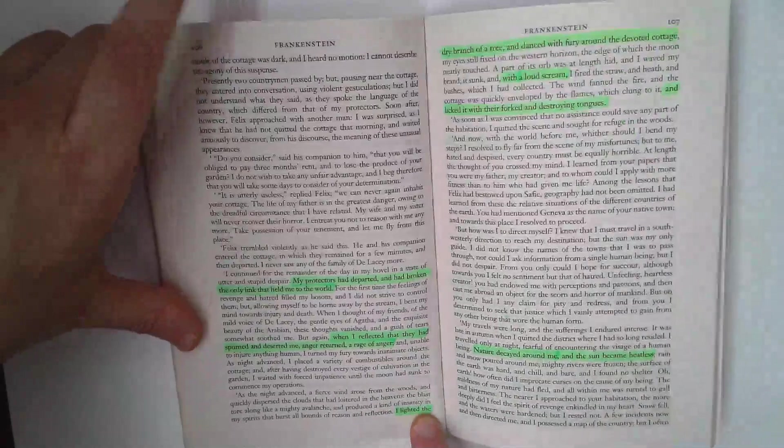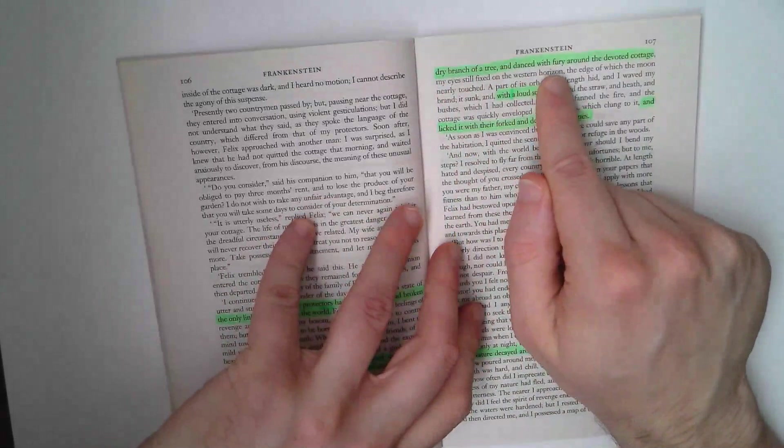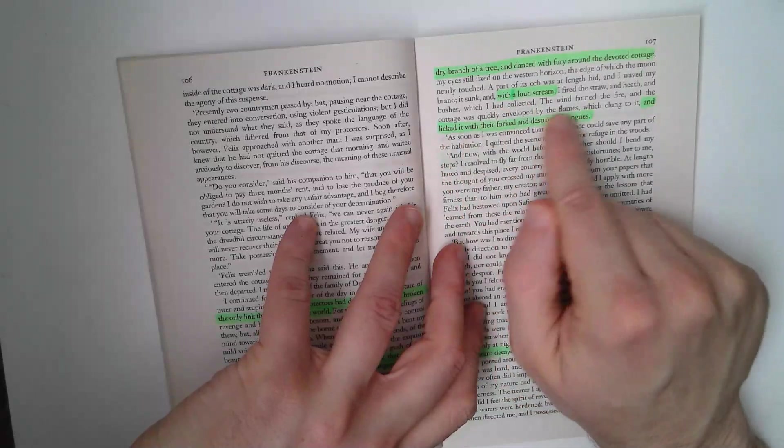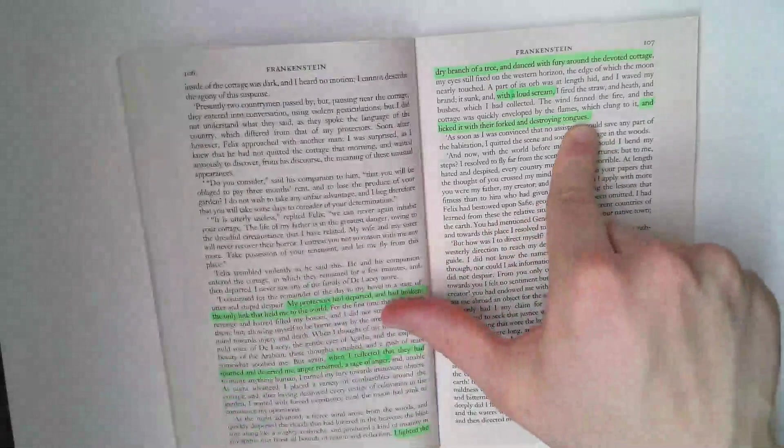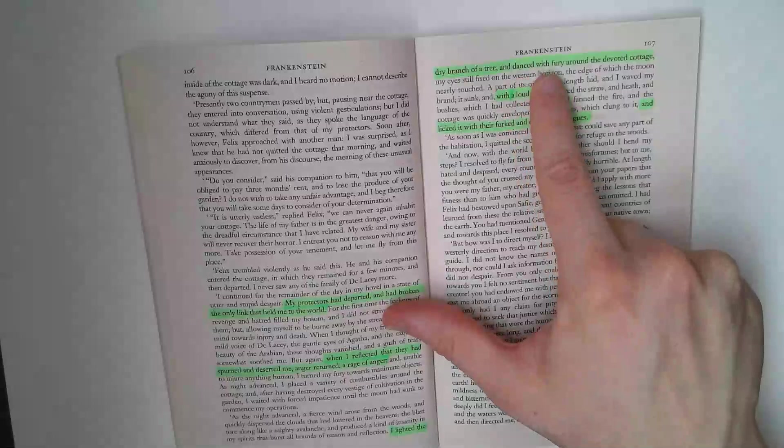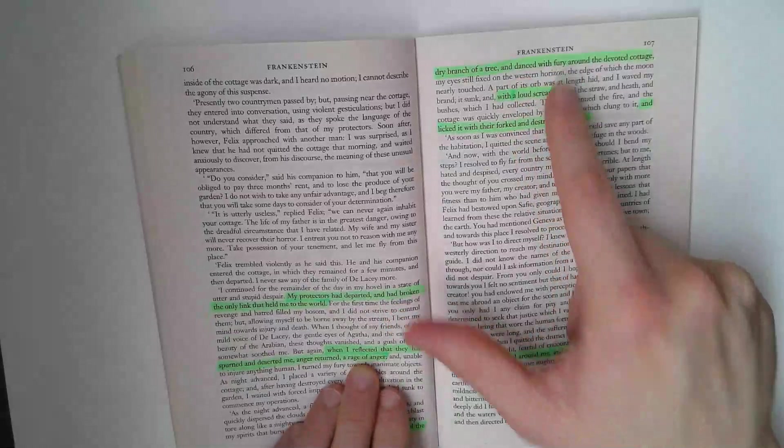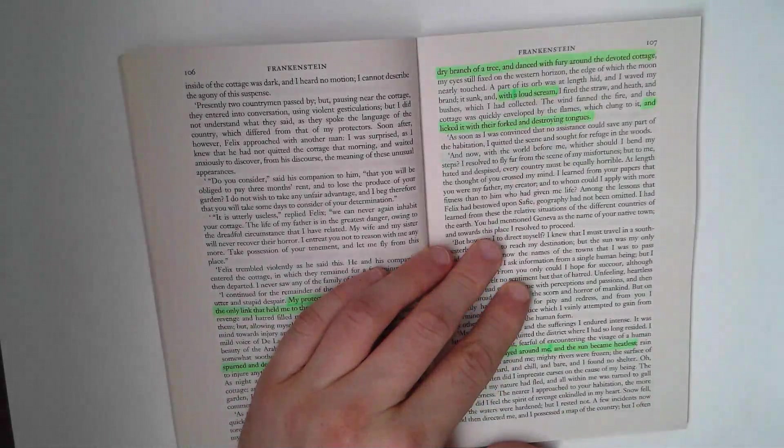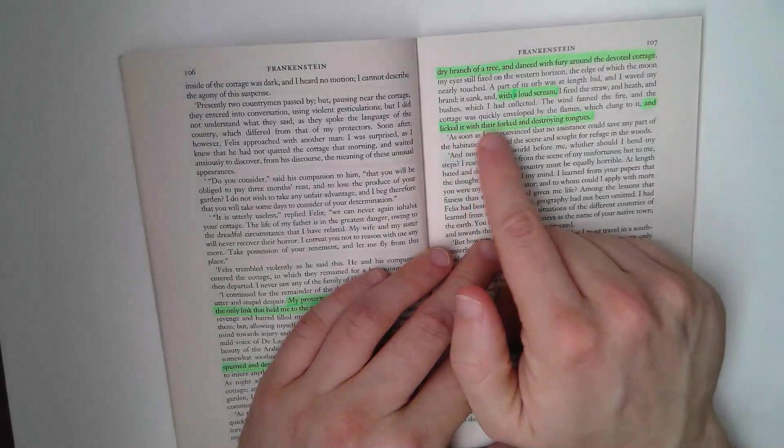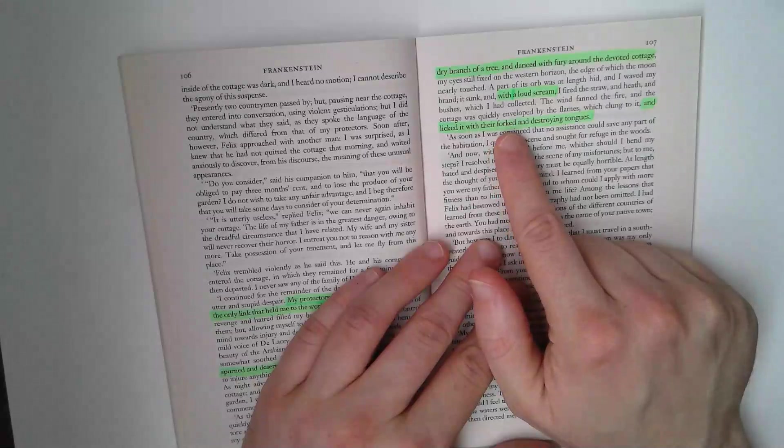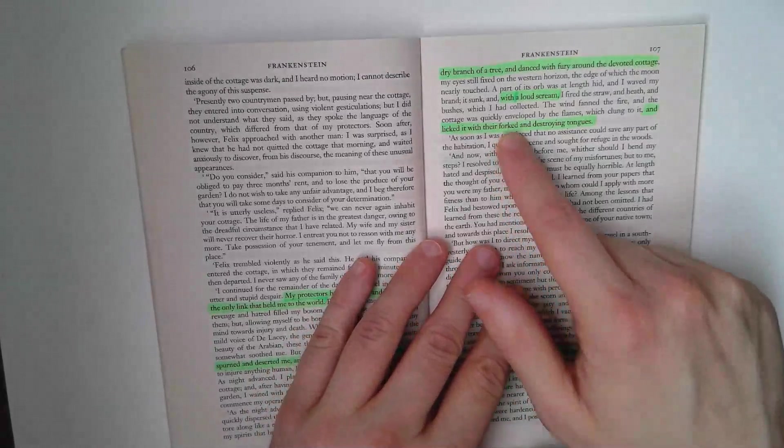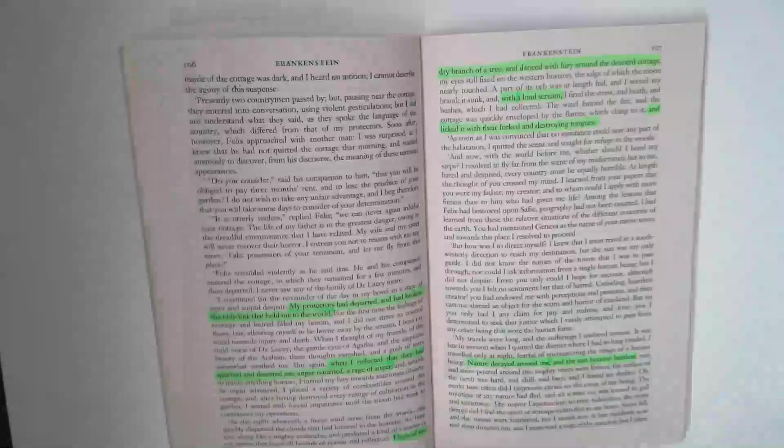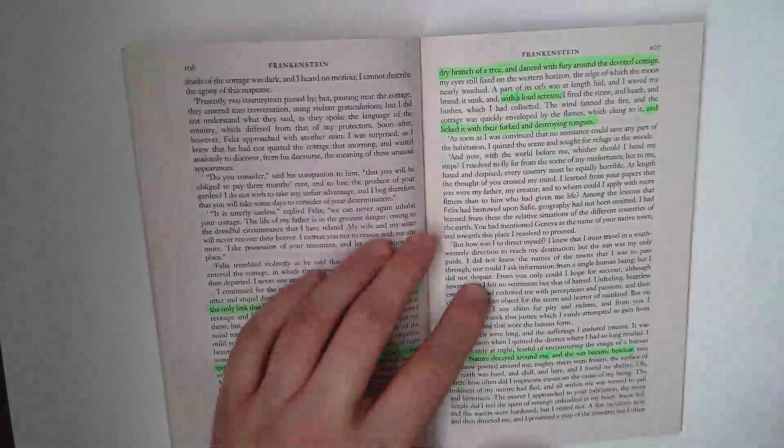And he burns the cottage to the ground. I lighted the dry branch of a tree and danced with fury around the devoted cottage with a loud scream. And the flame licked it with their forked and destroying tongues. There's this kind of sense of the fire brings him glee and fury and anger. And he's consumed with anger. He screamed. Almost like this savage description, this imagery of savagery in his character. And licked it with their forked and destroying tongues. Almost like a serpent. Or like the devil, often described as having a forked tongue there. Satanic imagery of the DeLacy's cottage. Of the creature getting his revenge on mankind.